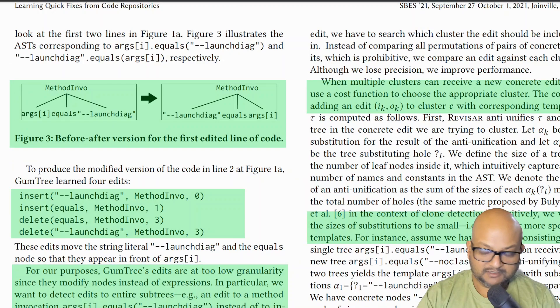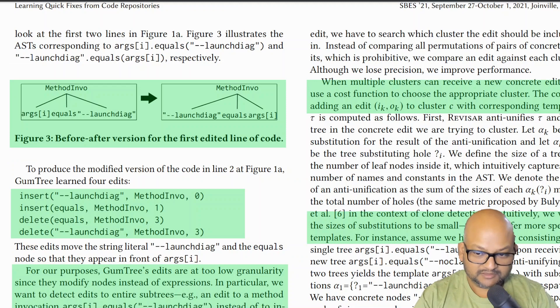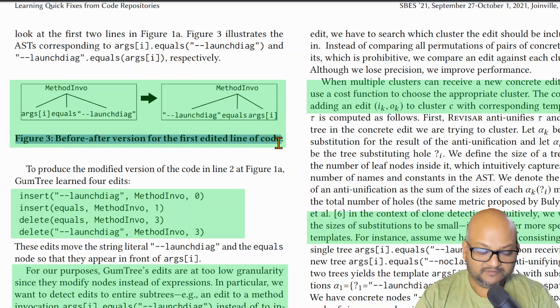I'll go over the algorithm that this tool follows at a high level, but I do encourage you to look at the paper if you're interested in the details. The very first step in this algorithm is to extract the abstract syntax tree of the edits made in each code commit.